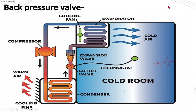Let's see what is a back pressure valve. A back pressure valve can be found in higher temperature rooms. If your cool room has to maintain a higher value — for vegetable handling or beverage rooms — where you have to maintain around 4, 5, or 10 degrees, then you can find the back pressure valve.